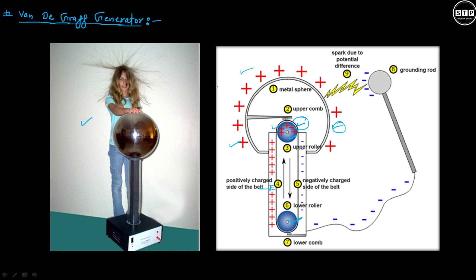As you know, V equals kq divided by r. So when q is high, the potential will also be high. That's why this Van de Graaff generator can also be used to store charge at higher potentials.